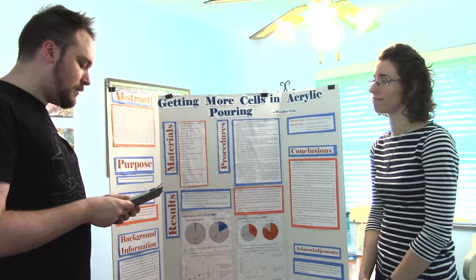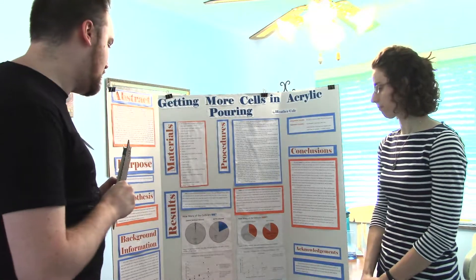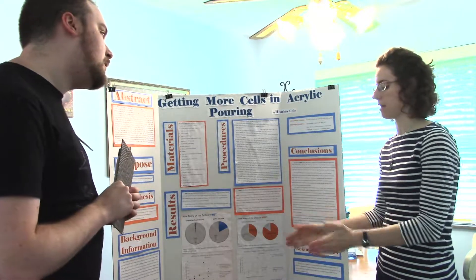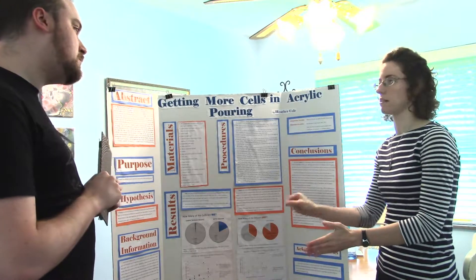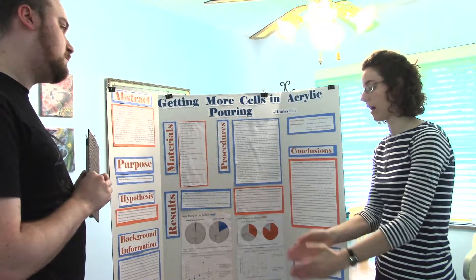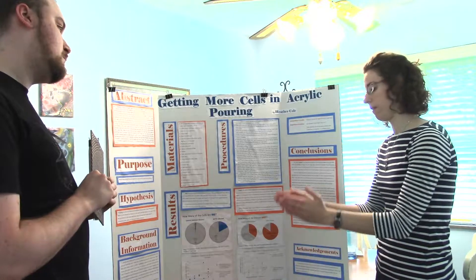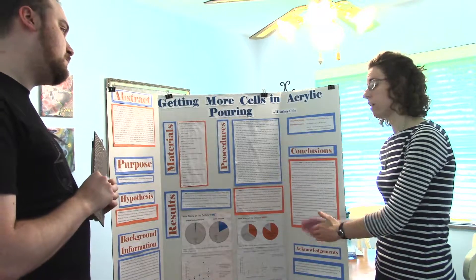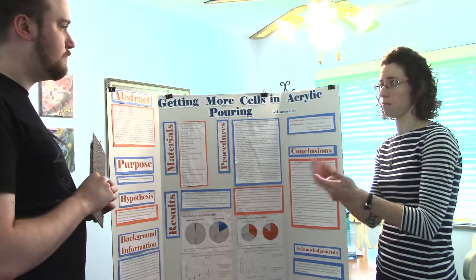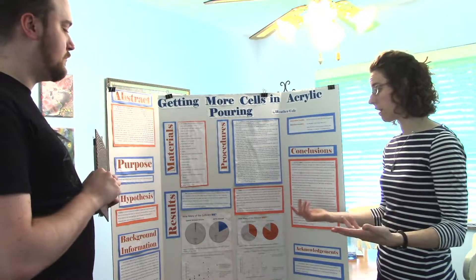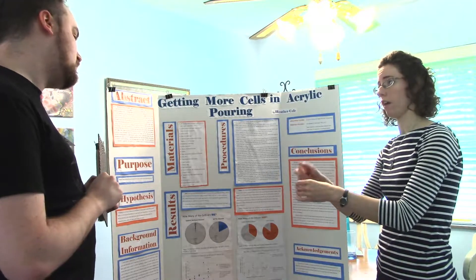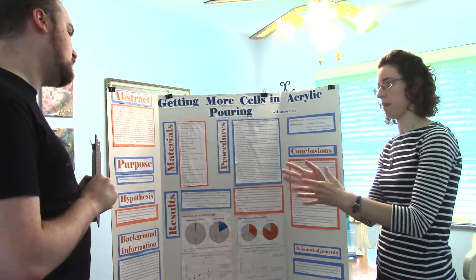How did you reach your conclusions? What I did was I counted in my paintings how many cells I got, and I compared the number of cells in the paintings that didn't have silicone oil to those that had an increasing amount. I was able to see how many cells there were and also how deep they were. I counted deep cells as ones that had different colors — more than just one color within the little bullseye pattern.